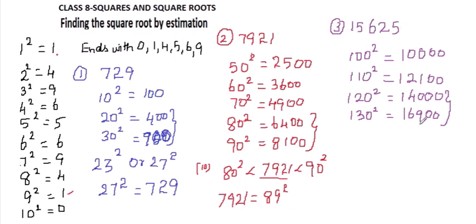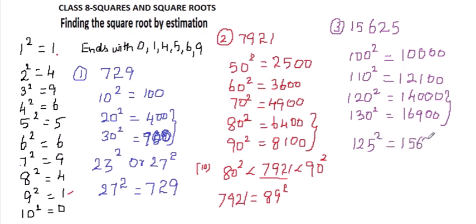130 square is 16,900. Hence we can say that 15,625 lies between 14,400 and 16,900. Now, the digit ends with 5, so the square root must be only 125. So we can guess and estimate that 125 square is 15,625, and we can check this by actual multiplication.